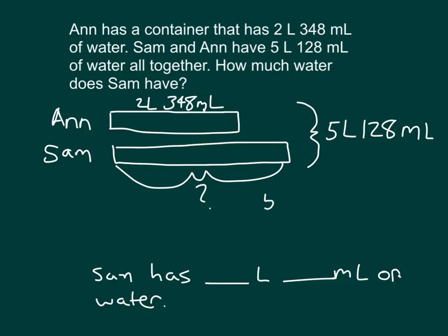If that's the case, let's do that same thing with 5 liters, 128 milliliters, and 2 liters, 348 milliliters. Now, our problem, if I started to try to subtract this, is I cannot subtract 348 from 128. It would be a negative number.